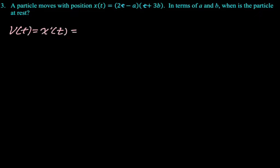So v of t is x prime of t. And then I'm going to use the product rule. You could expand it and then just use the power rule. Product rule is fine with me. So it's going to be first, 2t minus a, derivative of the second is 1, plus second, which is t plus 3b. Derivative of the first is 2. And then we need to clean this up. So I'm just going to distribute.